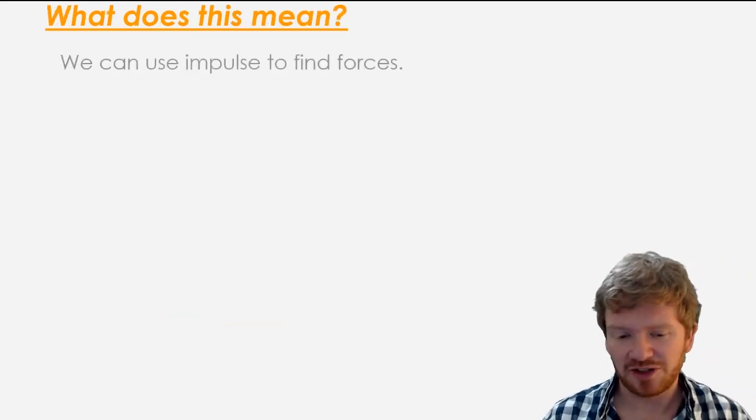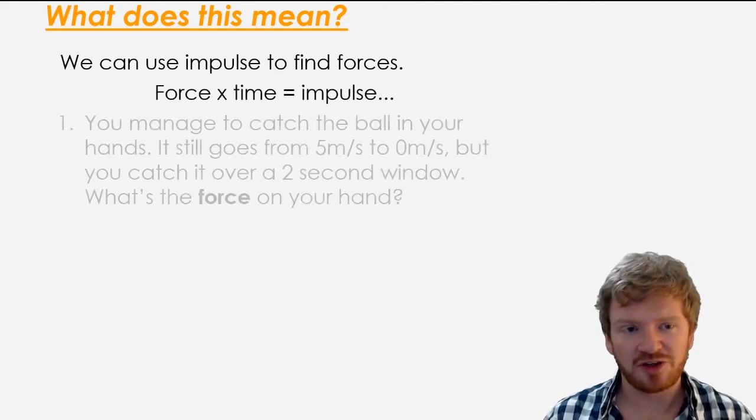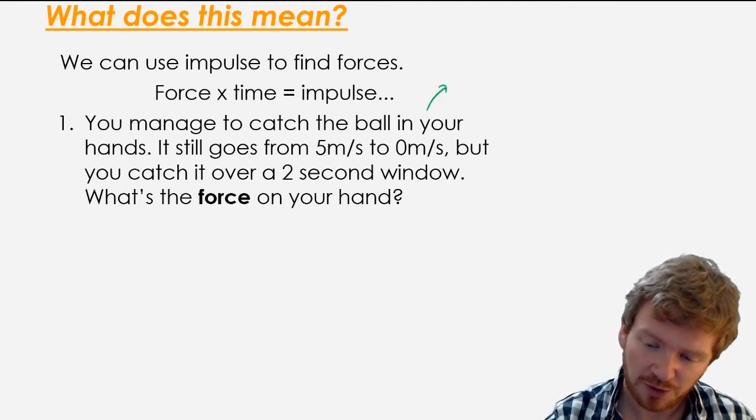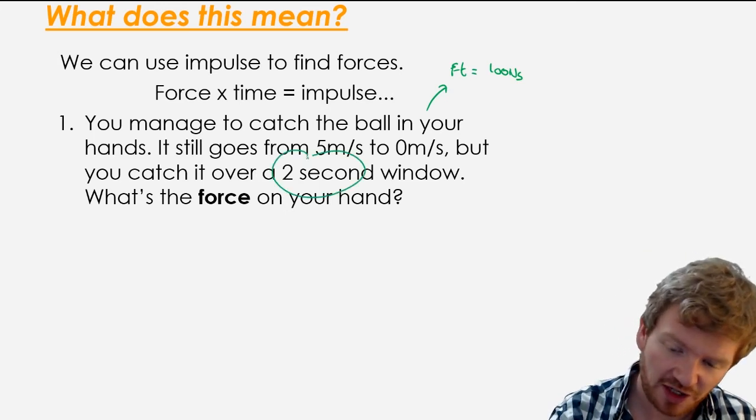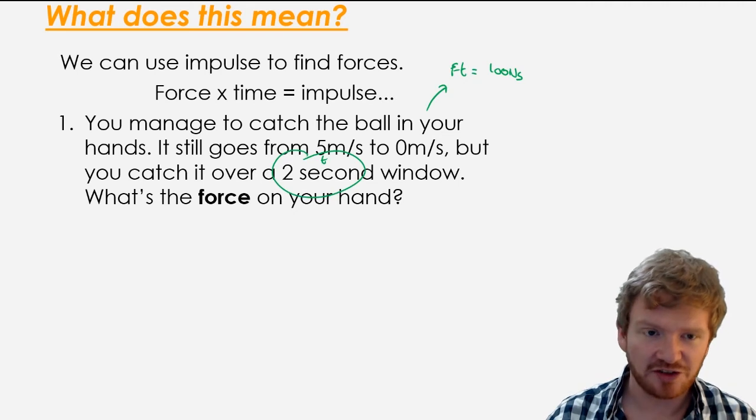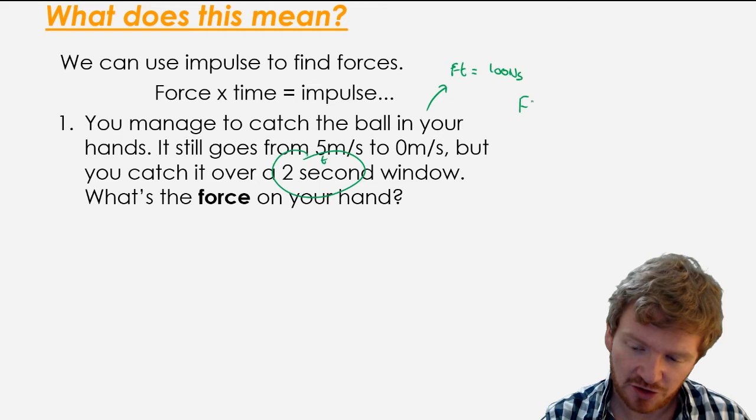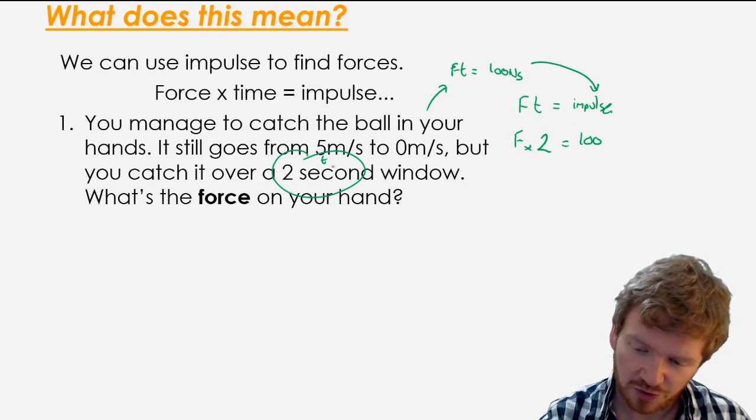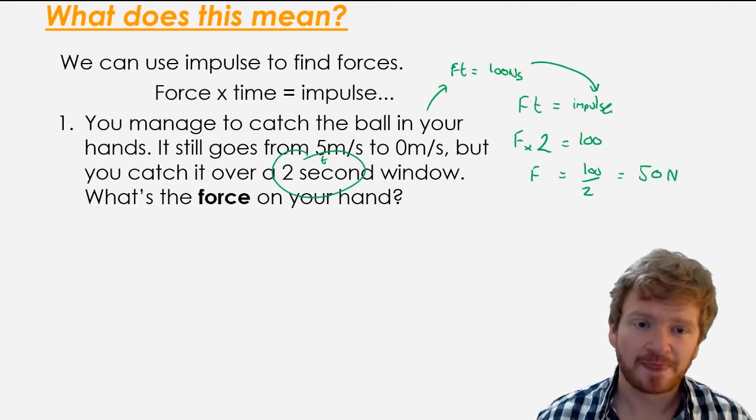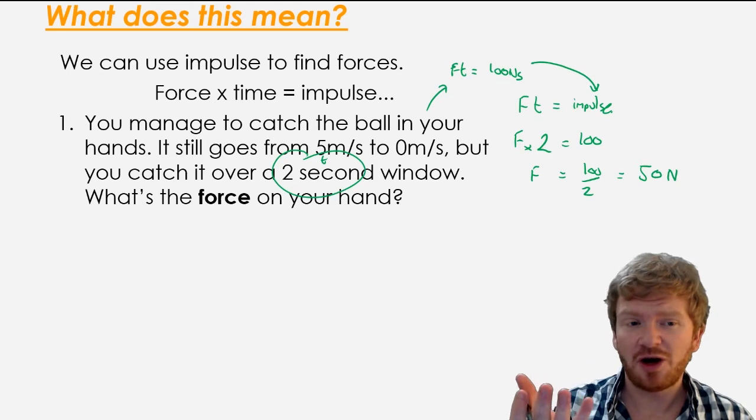Why is this important? Why do we bother using this? We can use impulses to find forces. We know that force times time is equal to the impulse. In the previous example, you catch the ball, which remember has an impulse of 100 newton seconds. You catch it in your hands and it takes two seconds. What's the force needed? I know that Ft is impulse, so substituting in, I can say F times two is equal to 100. Impulse was 100, t was two seconds. Rearranging the equation, I get F is 100 over 2, which is 50 newtons. And that's equivalent to holding five kilos in your hand. So uncomfortable, but not a problem.